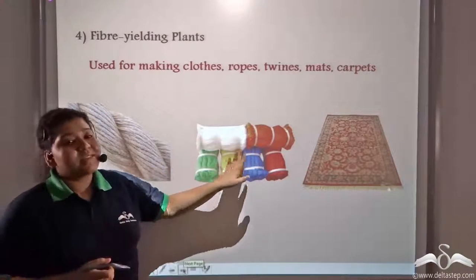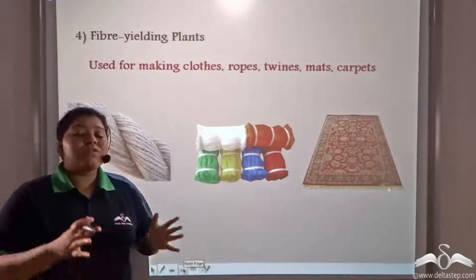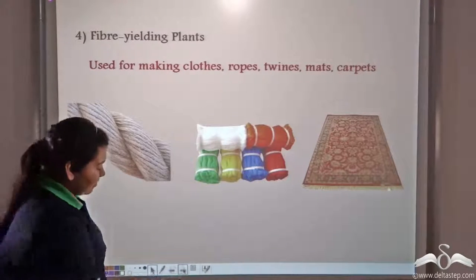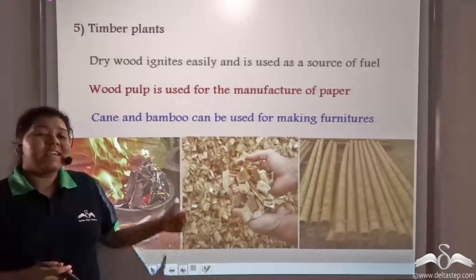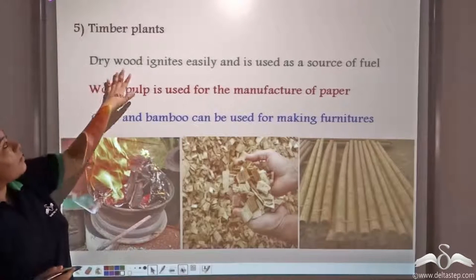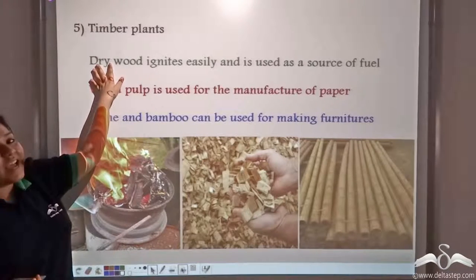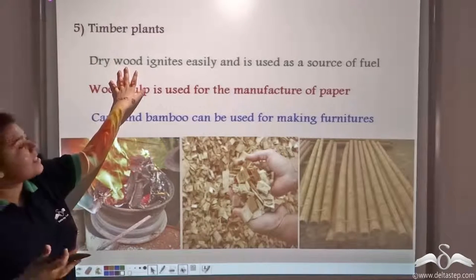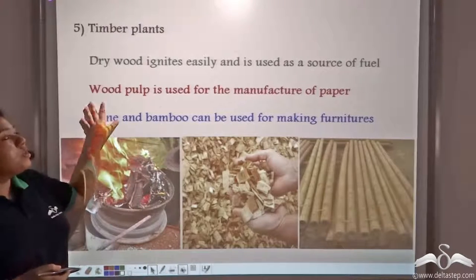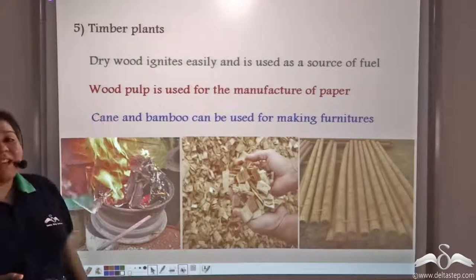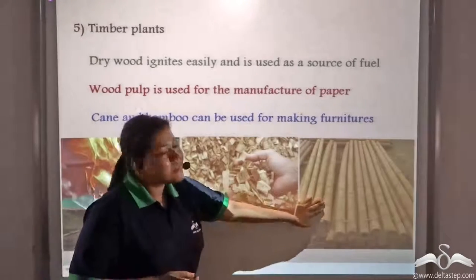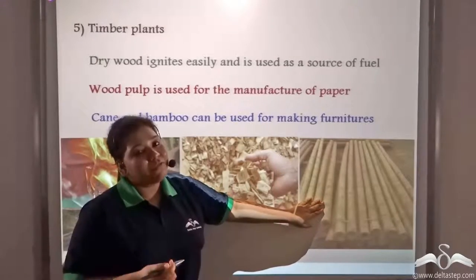Ropes, clothes, and mattresses are also products of cash crops such as cotton and jute. Timber is an important cash crop because dry wood ignites easily and can be used as a source of fuel. Wood pulp is used for the manufacture of paper. Canes and bamboos can be used for the manufacture of furniture.